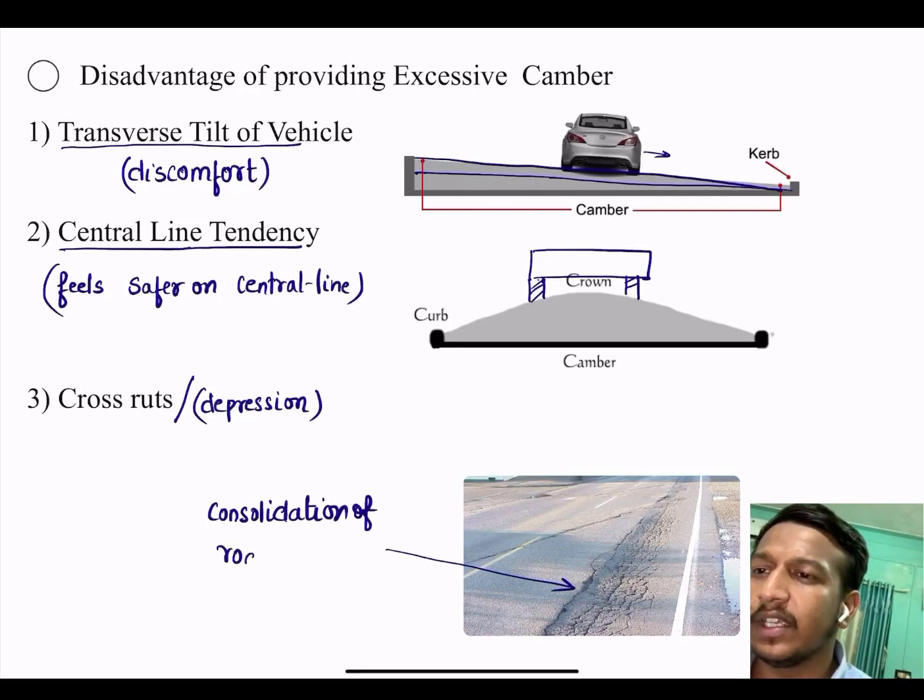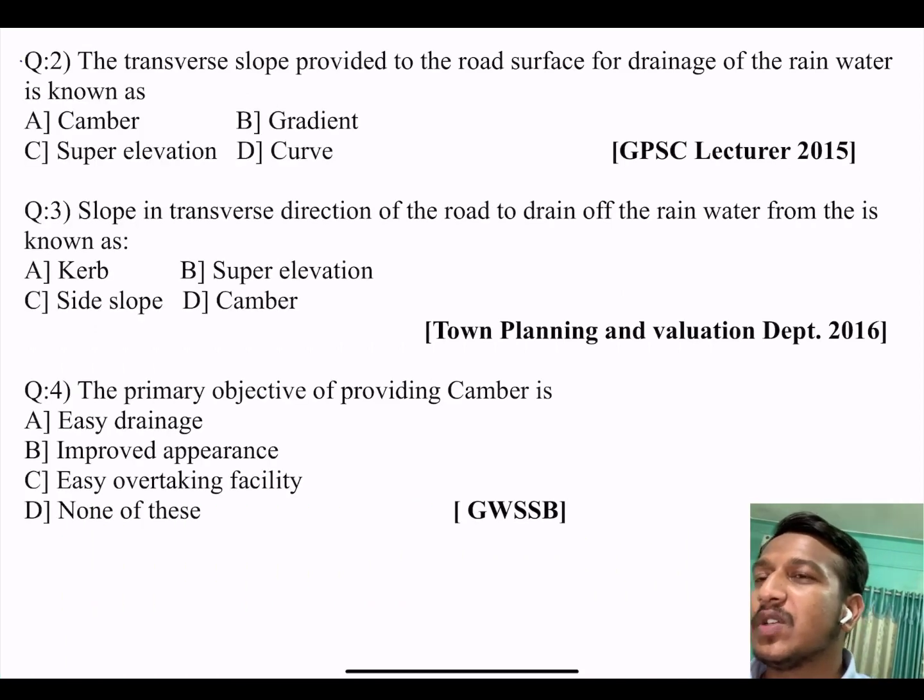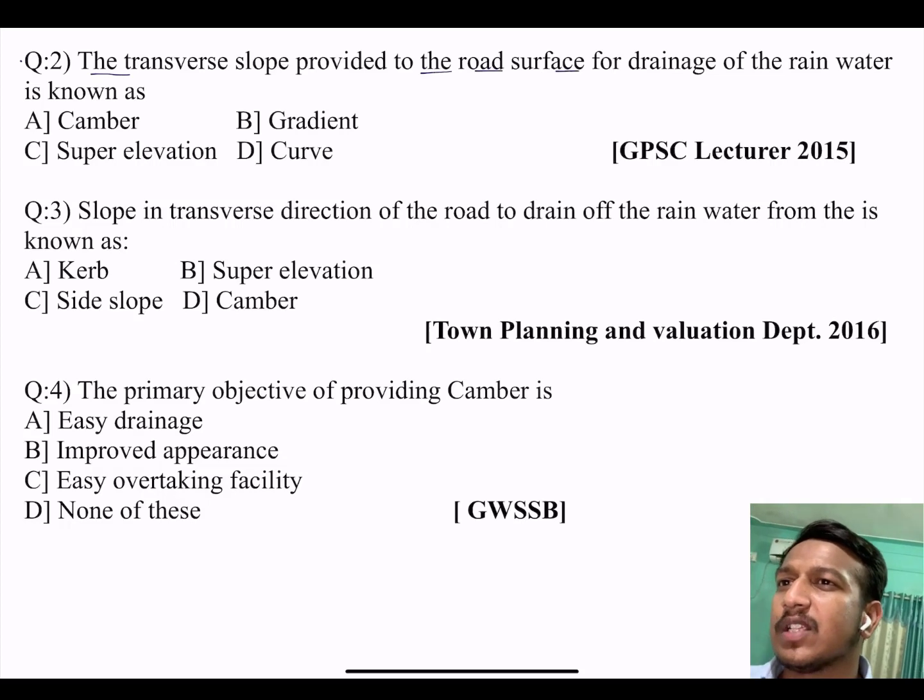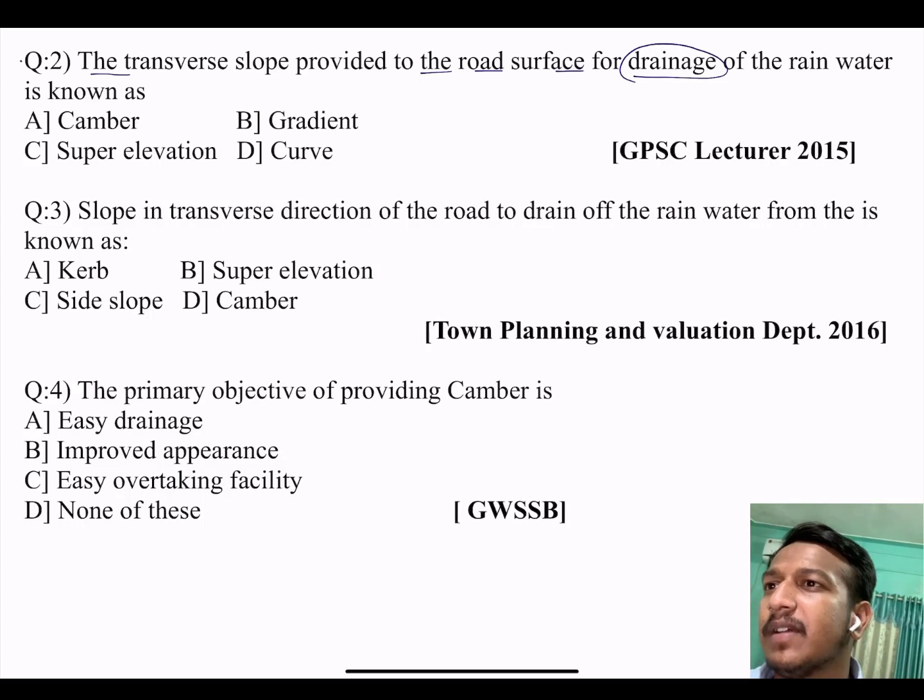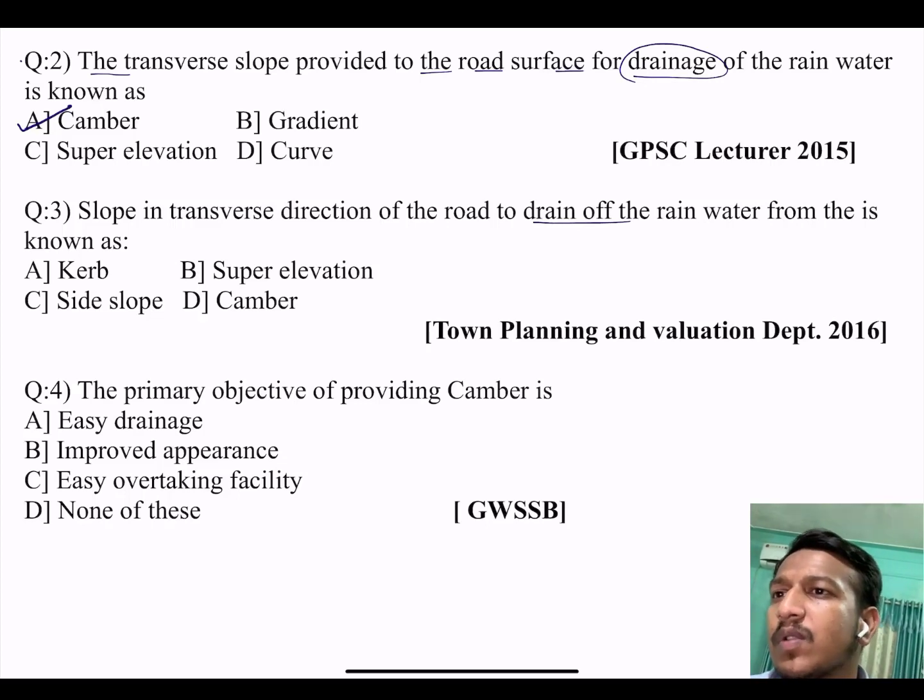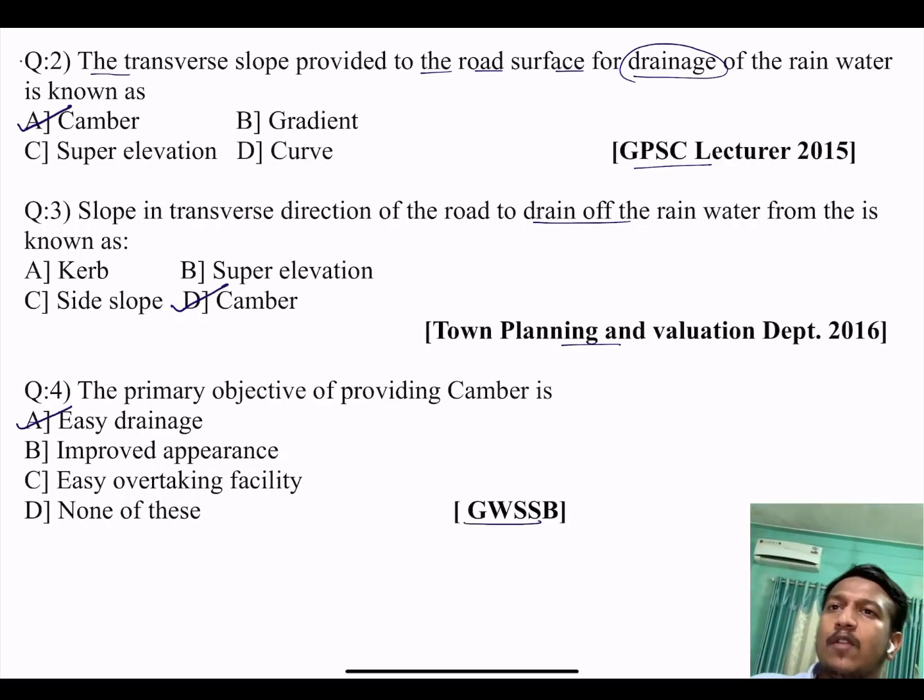Let us see the questions. This was asked in last GPSC. Question 2: The transverse slope provided on the road surface for drain of the rain water is camber. Question 3: Slope in transverse direction of the road to drain off the rain water is also known as camber. Question 4: The primary objective of providing camber is option A, easy drainage. The question was asked from GPSC lecturer, Town Planning and Evaluation Department.